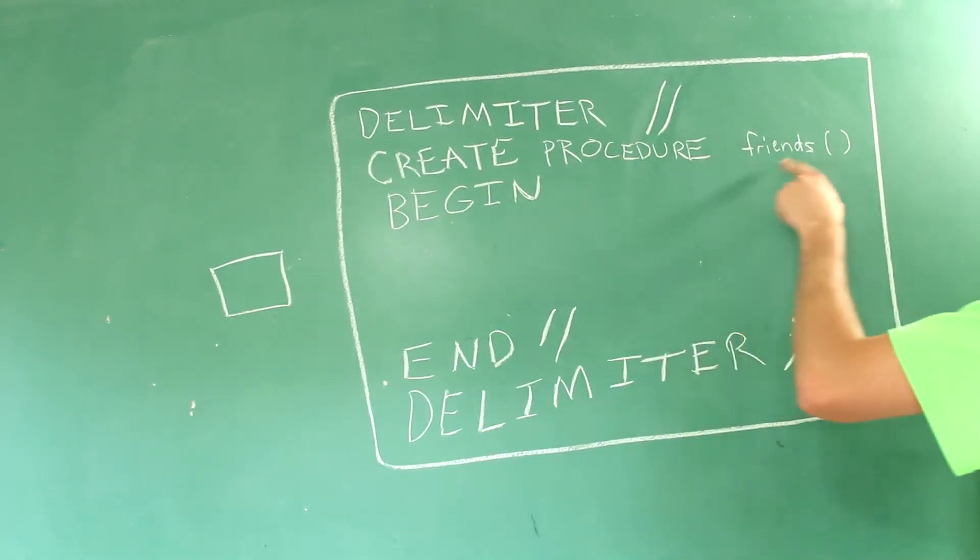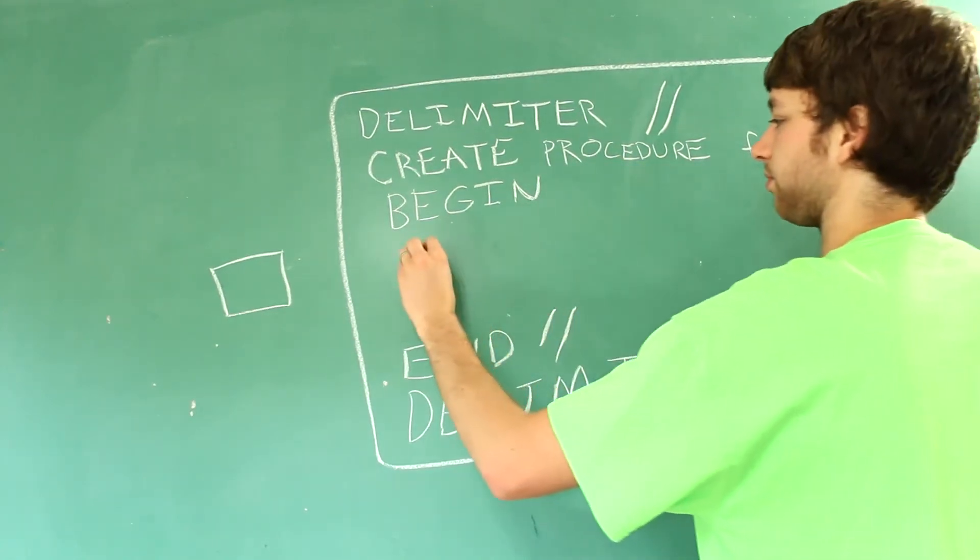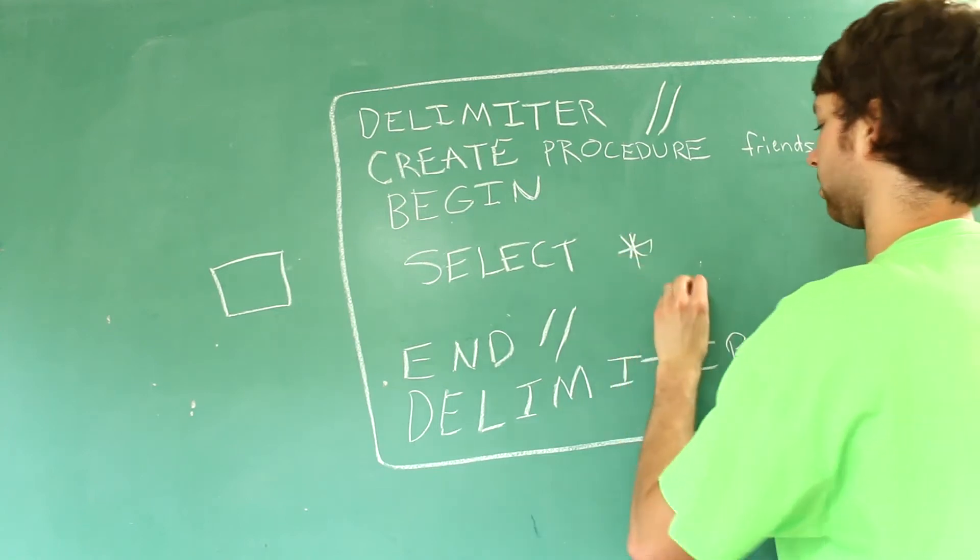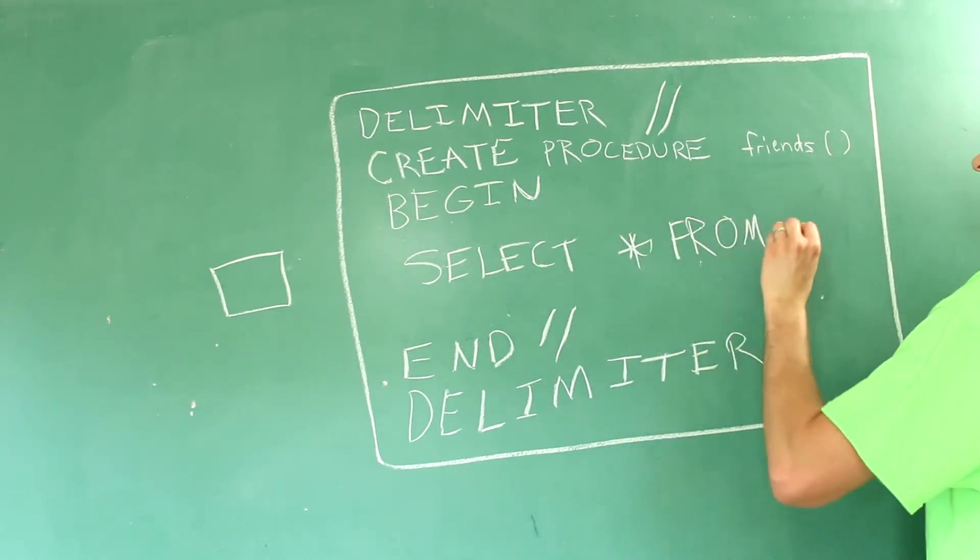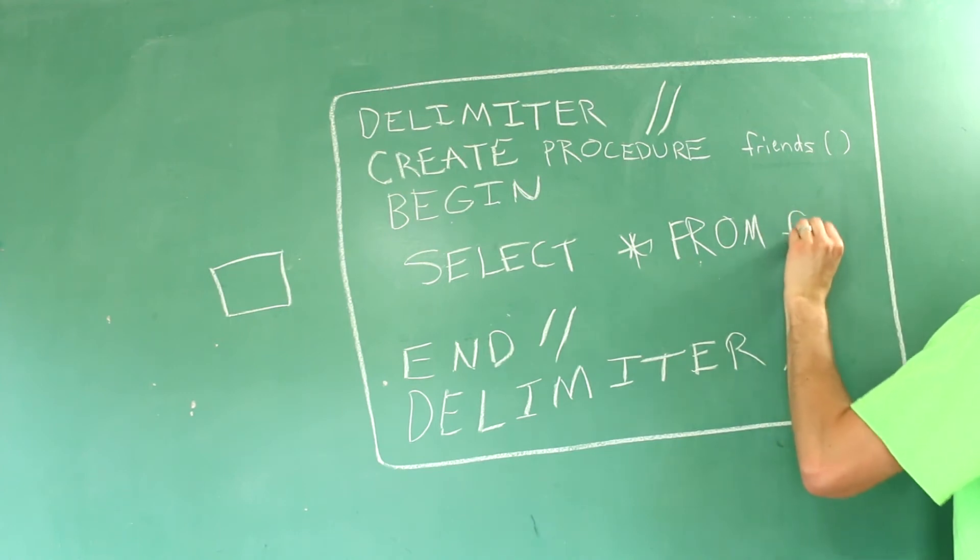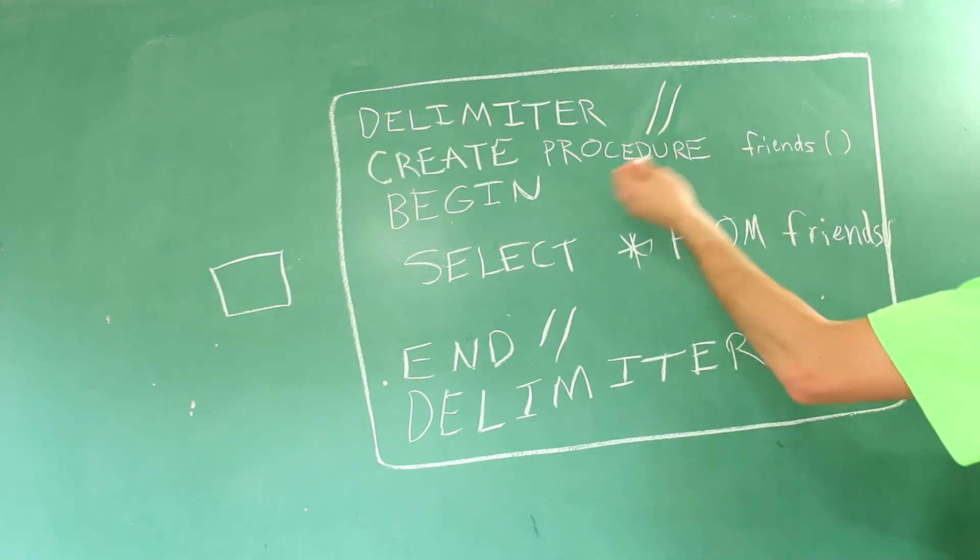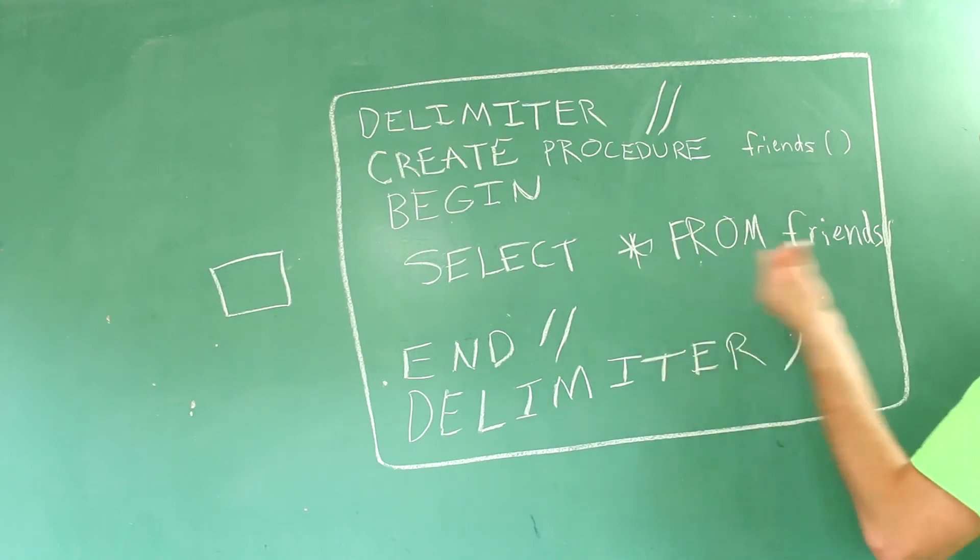So since we're having this procedure called friends we'll just say select everything from friends. So let's just say we have a friends table and that's what it's going to do. Kind of ran out of room there but it's okay. So this is a procedure that is going to return everything from the friends table.